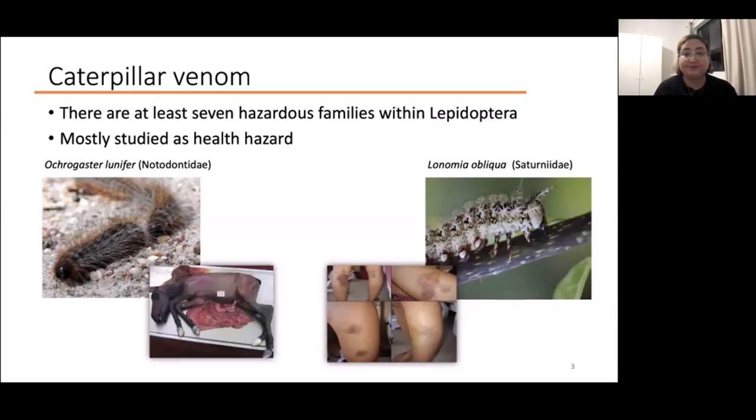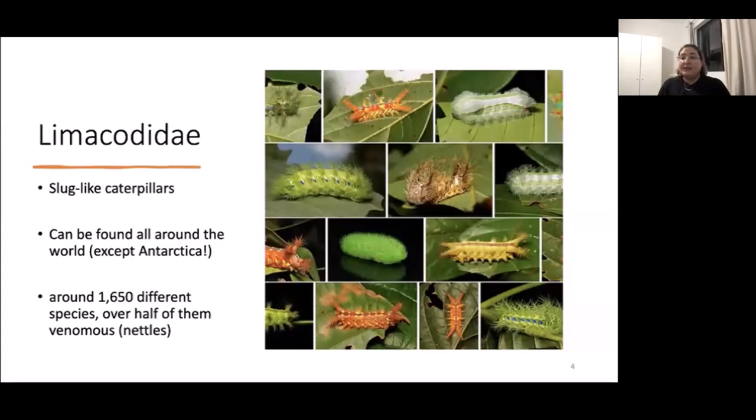But there is another family within Lepidopterans called Limacodidae that we even know less about. They are different from other caterpillars in their slug-like adhesions and movements. They can be found in all continents—in Asia, Africa, North and South America, and Australia—and they are really diverse. Some of them have these spines that can cause irritation and they are called nettle caterpillars.